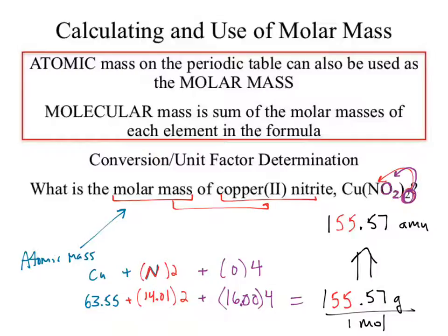What are the units on 63.55? It could be AMUs, giving AMUs as the final answer. The other option is 63.55 grams per mole — per how many moles? Exactly one. That's what the periodic table is giving you — that's why it's called the molar mass. So when we scale through, the answer is grams per mole of our compound, meaning one mole of copper nitrite contains one mole of copper, four moles of oxygen, and two moles of nitrogen.